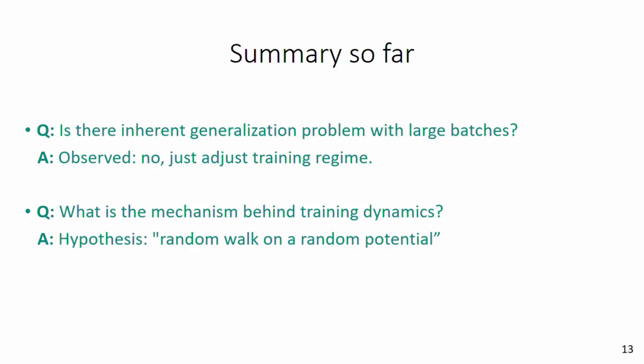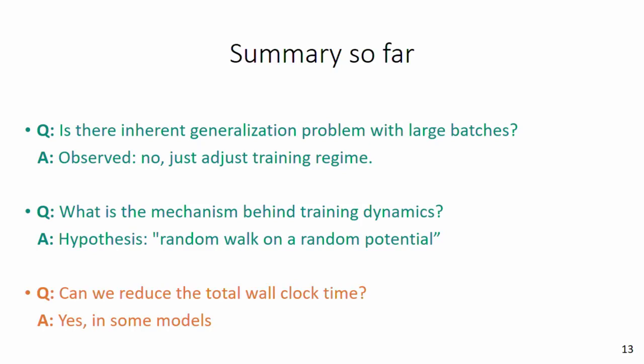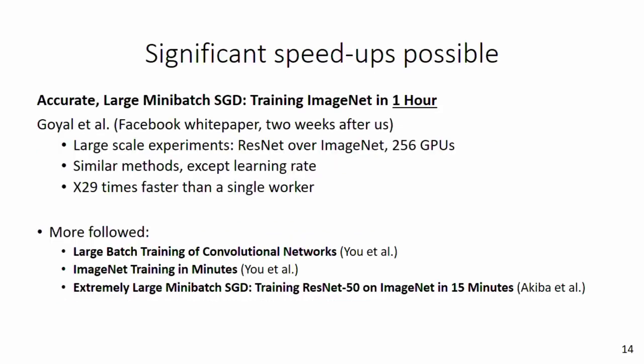To summarize our findings: in contrast to previous works, we observed that there is no inherent generalization problem when training with large batch. All that is needed is to adapt the training regime in order to achieve comparable and even better generalization. We suggest an explanation based on a random walk over random potential, requiring an exponential number of training iterations to reach a desired minimum. Since our paper went public, several works continued to make progress in training large models with larger batches using ideas very similar to ours, with the latest work allowing training of ImageNet models in as low as 15 minutes, which previously required several days.